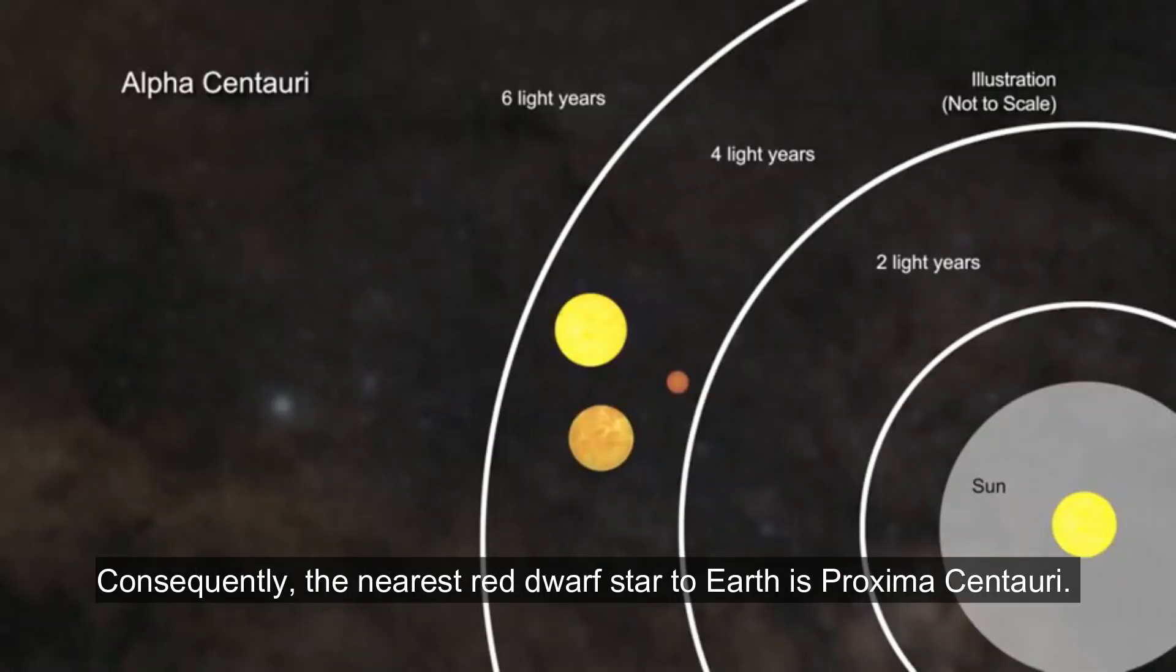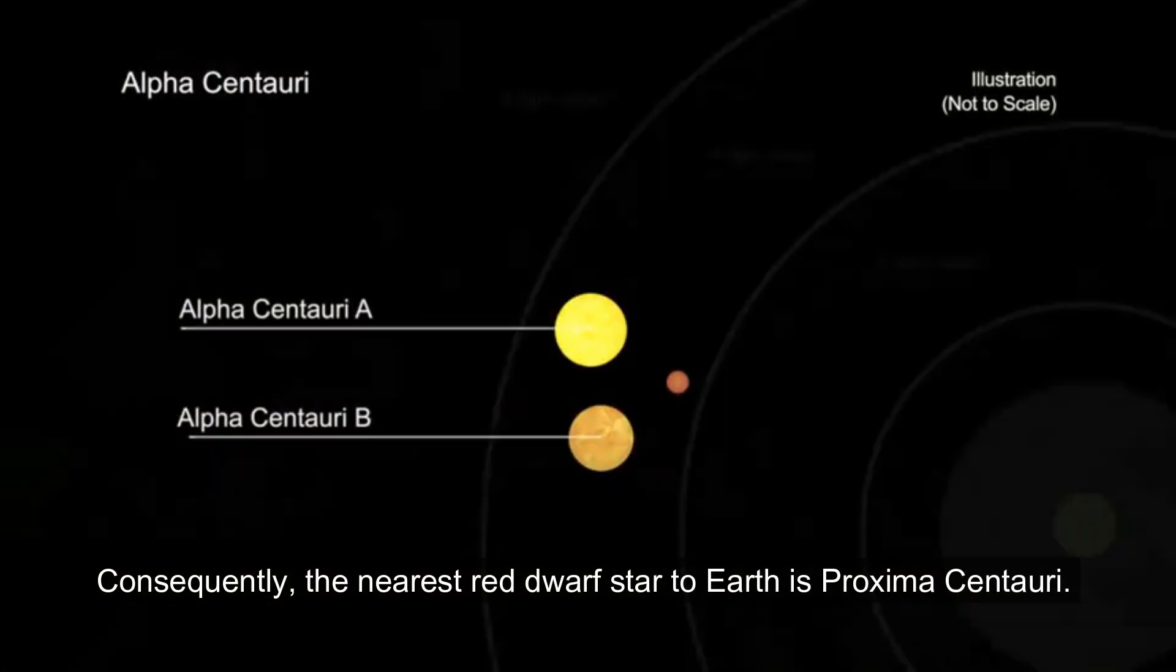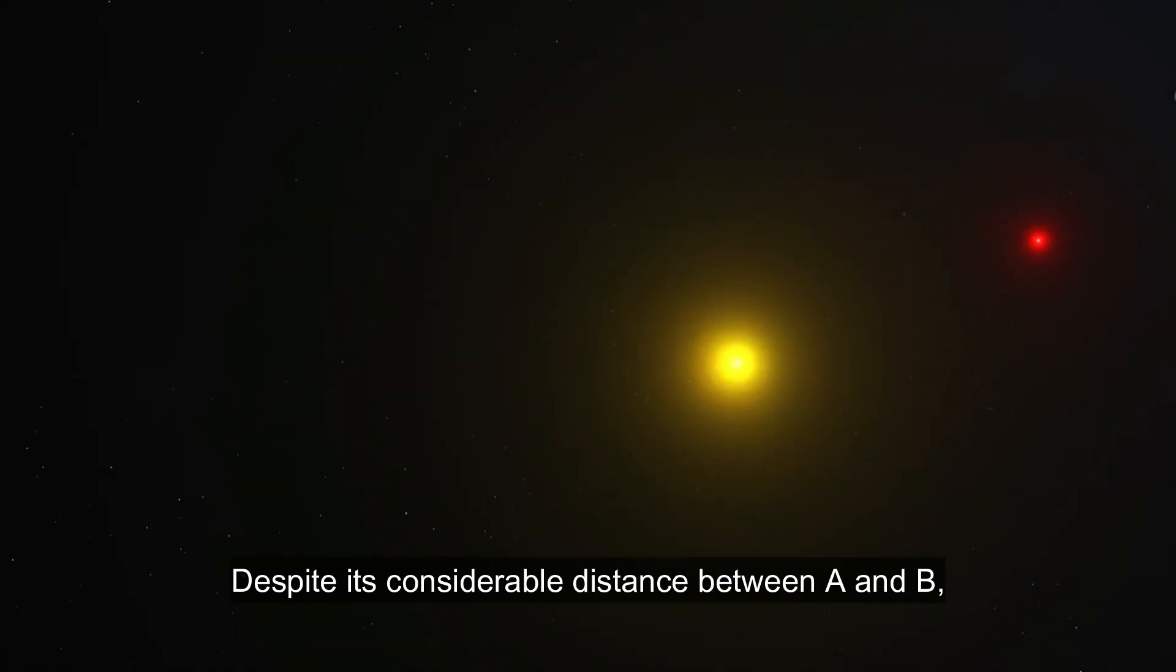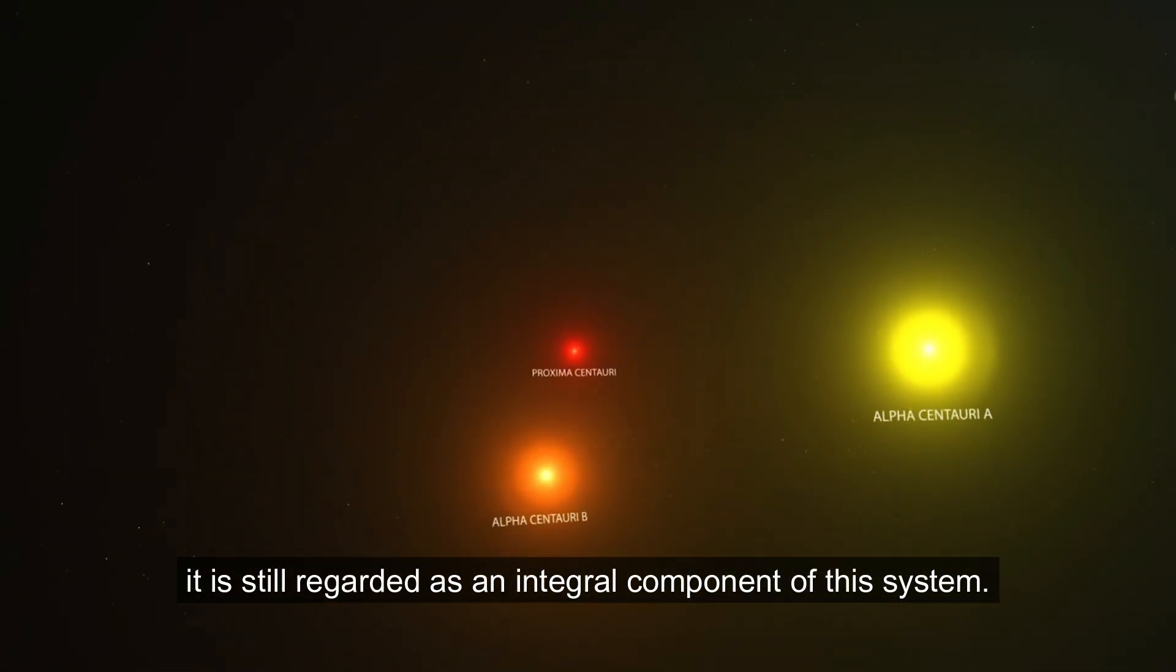Consequently, the nearest red dwarf star to Earth is Proxima Centauri. Despite its considerable distance between A and B, it is still regarded as an integral component of this system.